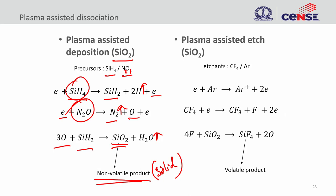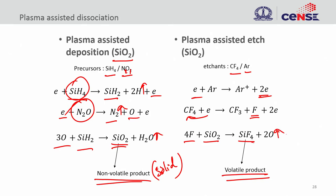On the etching side, to etch silicon dioxide we can use CF₄ and argon. Argon is important because it supplies electrons. Those electrons bombard CF₄ creating fluorine radicals. When four fluorine atoms react with SiO₂, they create SiF₄, which is a volatile product, along with volatile oxygen byproducts. So you convert a solid product into volatile products — this is called plasma etching or dry etching. The solid silicon dioxide is removed by creating volatile species.